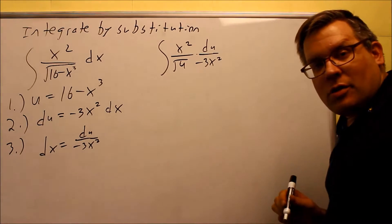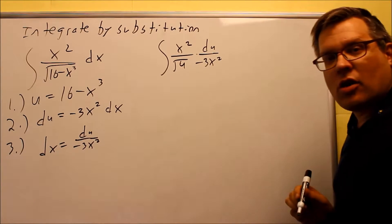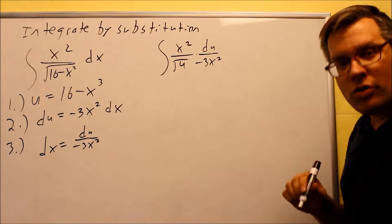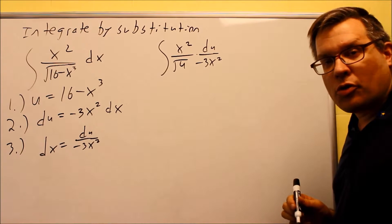So once you've put that in, we need to do some simplifying. Again you should always cancel out every variable except for the u. The u should be the only variable you should have left over.